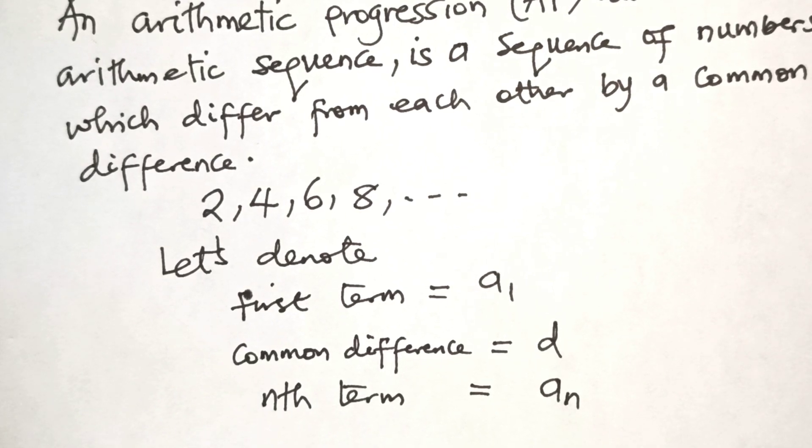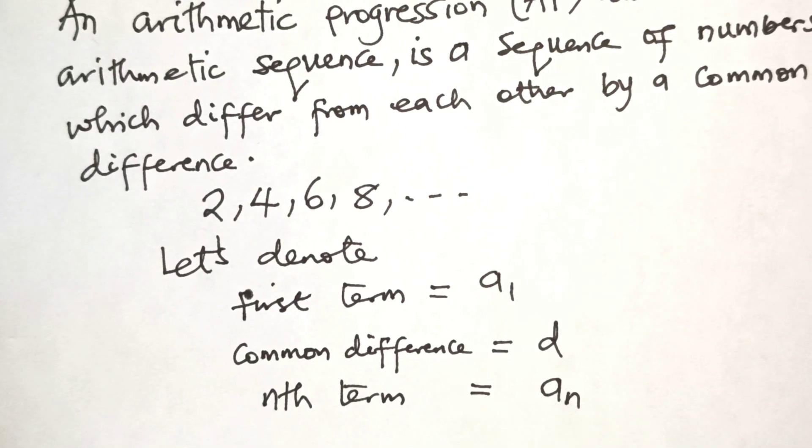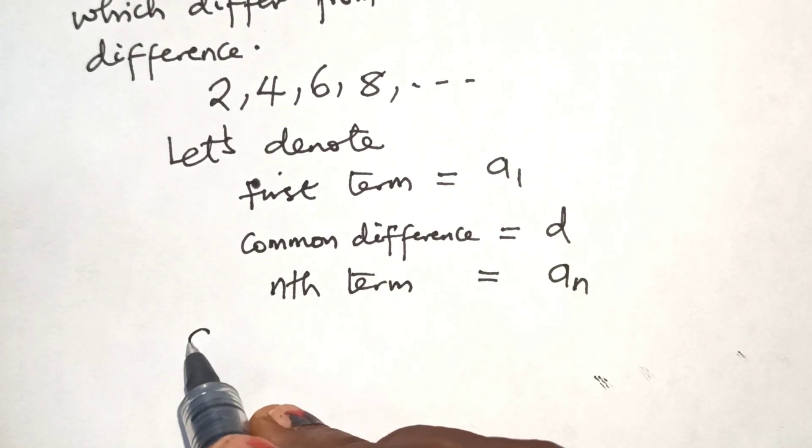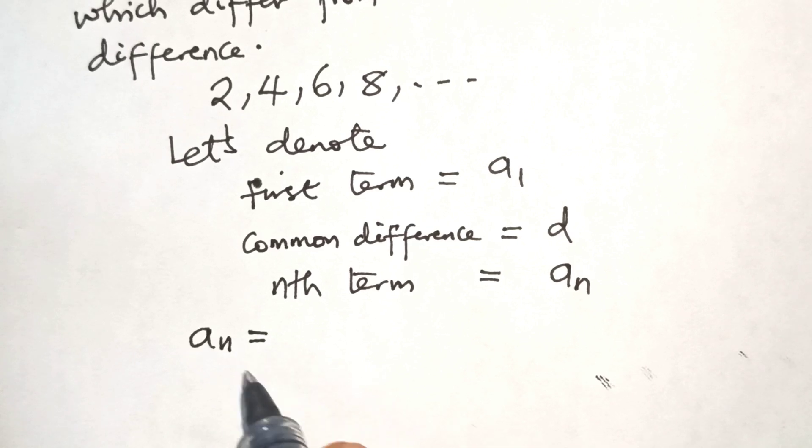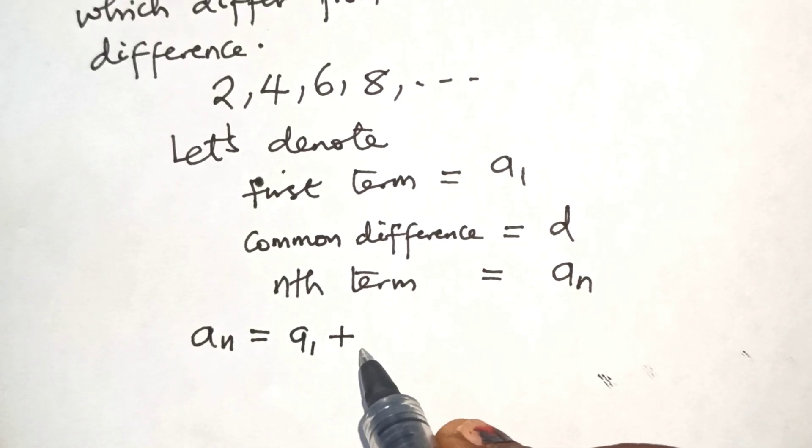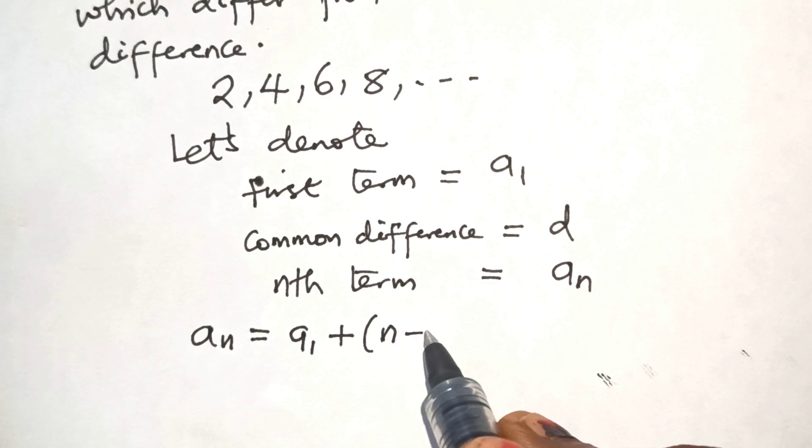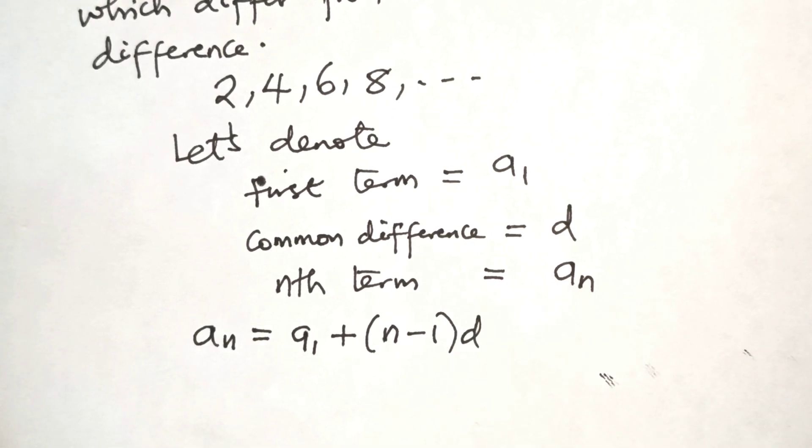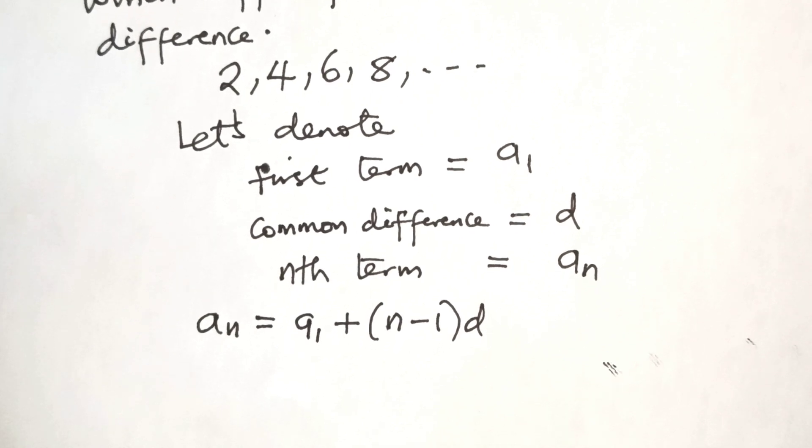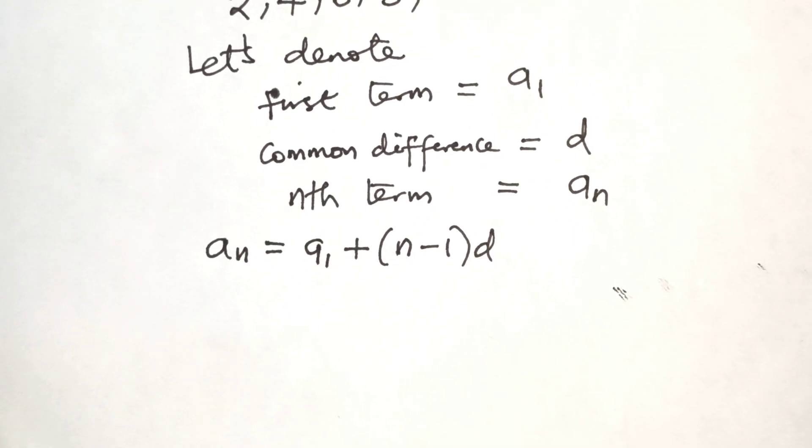Then, the nth term of an arithmetic progression is given by AN equals A1 plus N minus 1 multiplied by D. So we are going to solve a few examples now on AP.